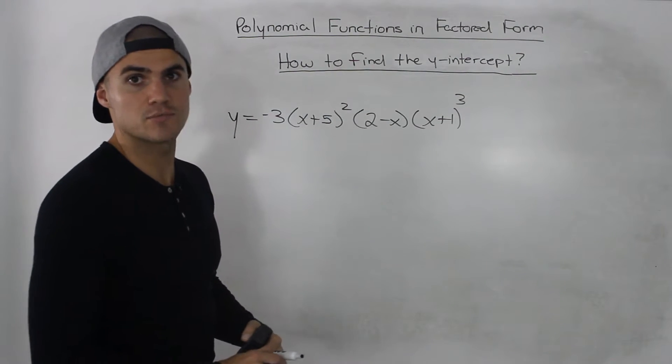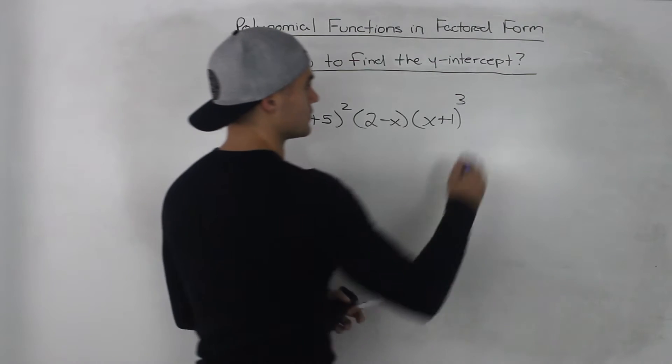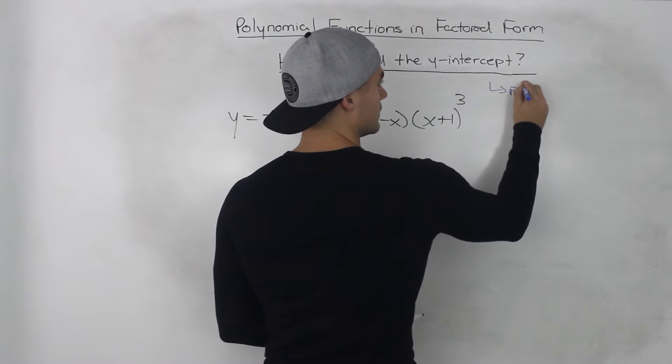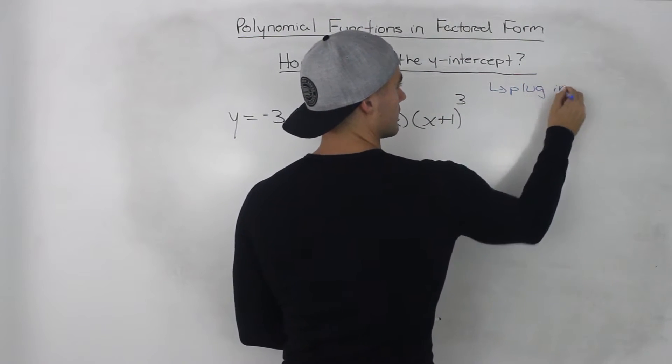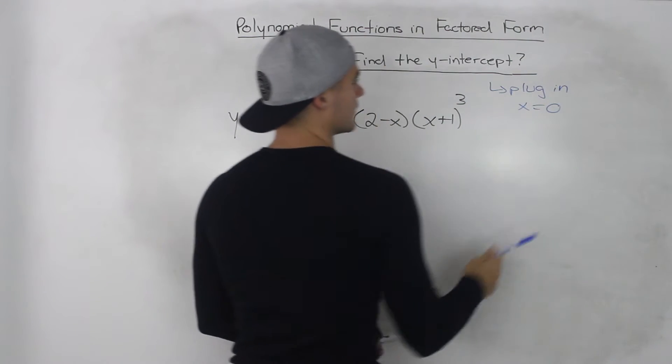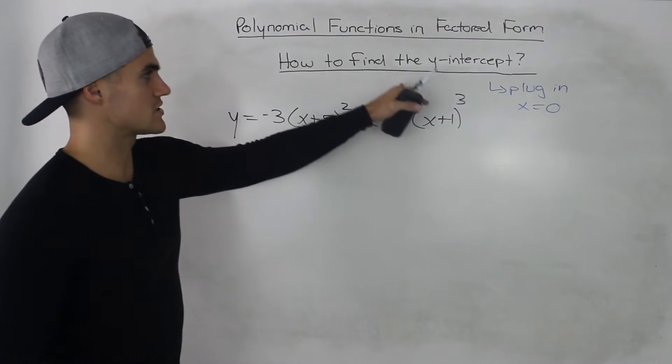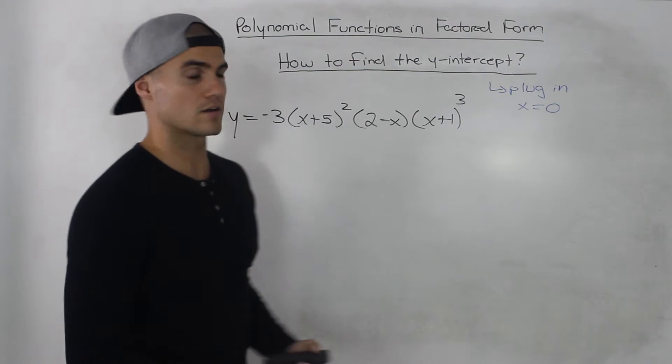How do you find the y-intercept just in general? All you do is you plug in x equals 0 because the y-intercept will always have an x value of 0.